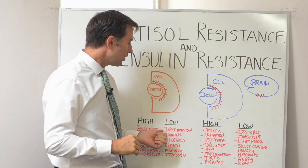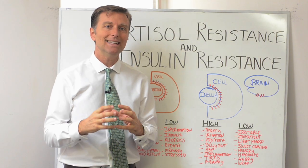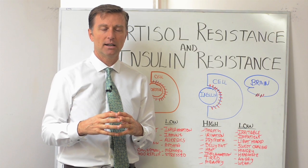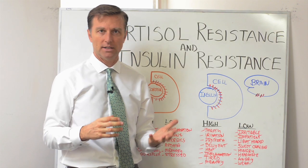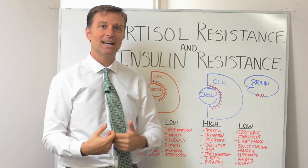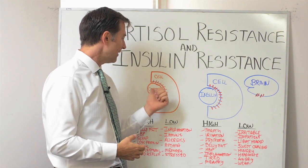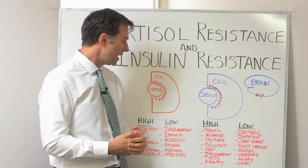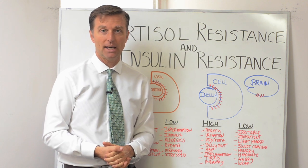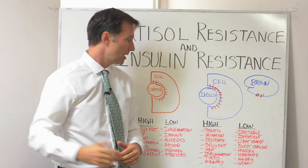The symptoms of low cortisol are inflammation. We need cortisol — you can't live without it, but we don't need too much of it. Cortisol is one of the main anti-inflammatories, so if you don't have it working in the body, you have a lot of inflammation: bursitis, tendonitis, arthritis, those types of things.